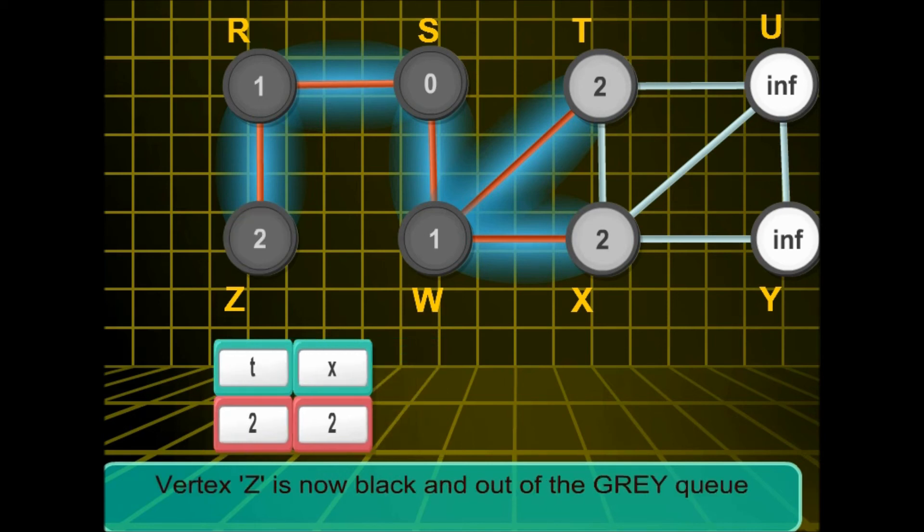We find that there are no white nodes adjacent to z. So z is simply dequeued and marked black.